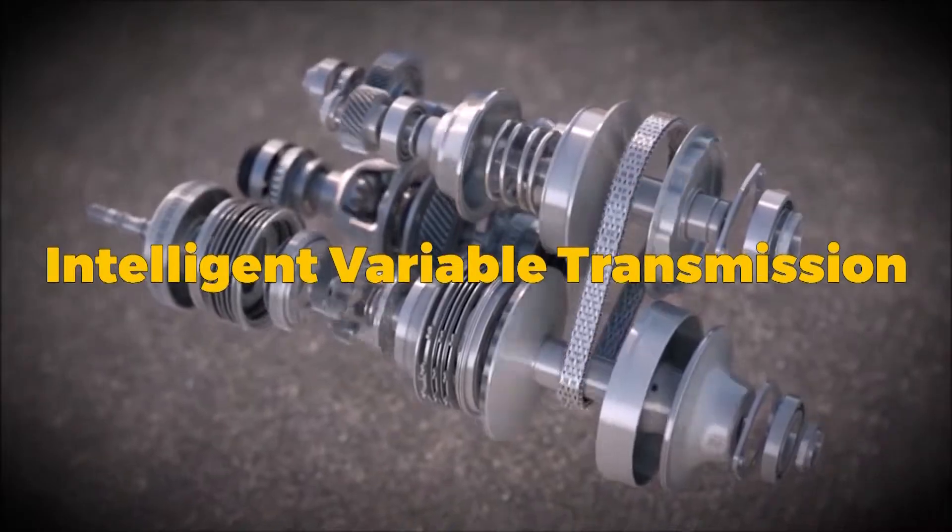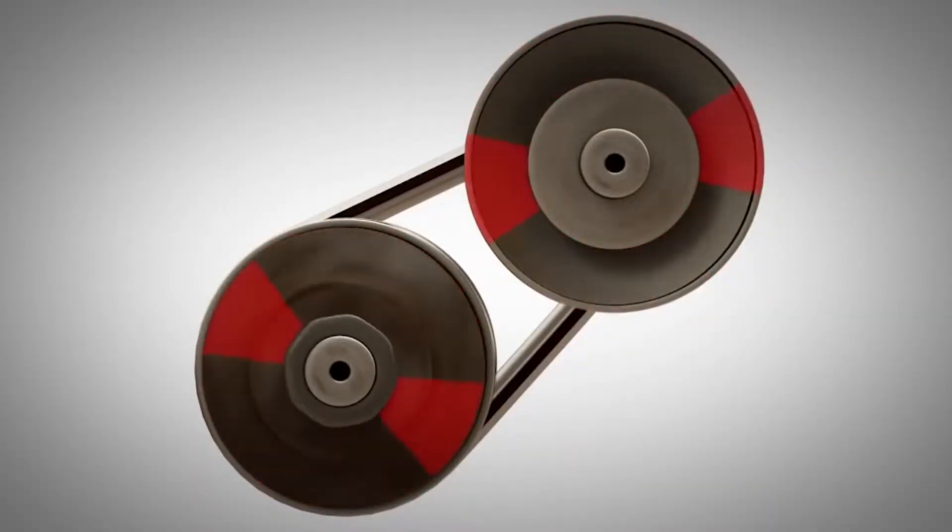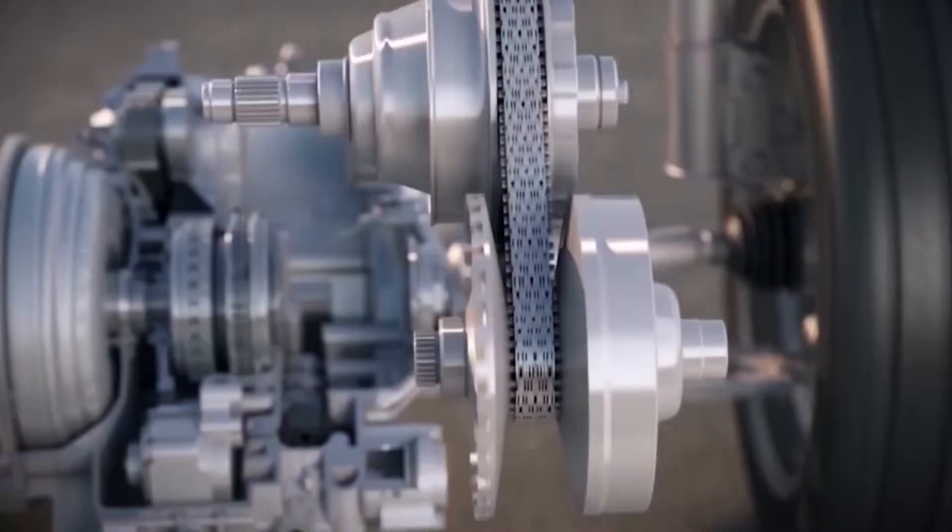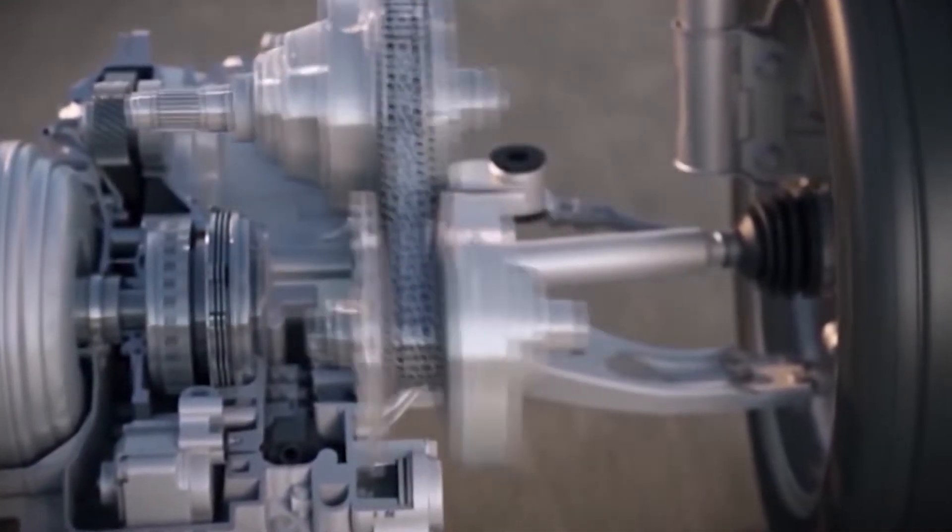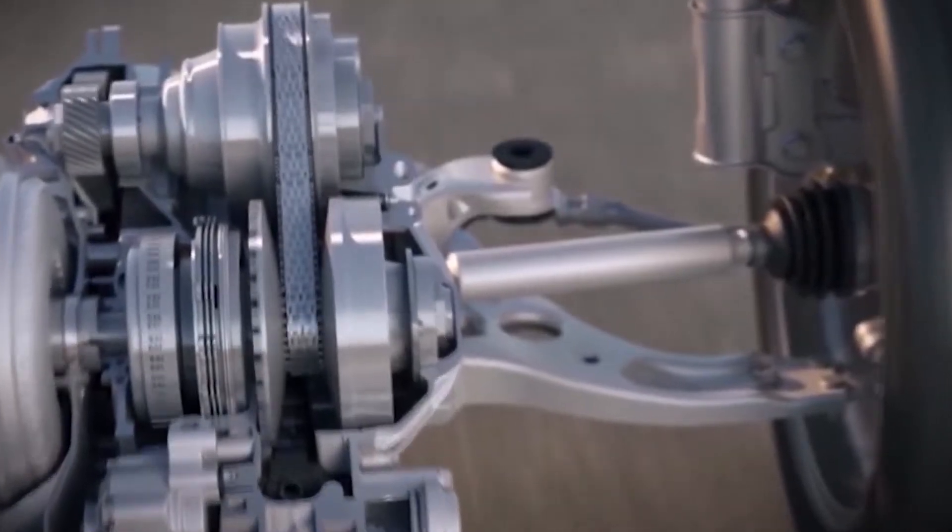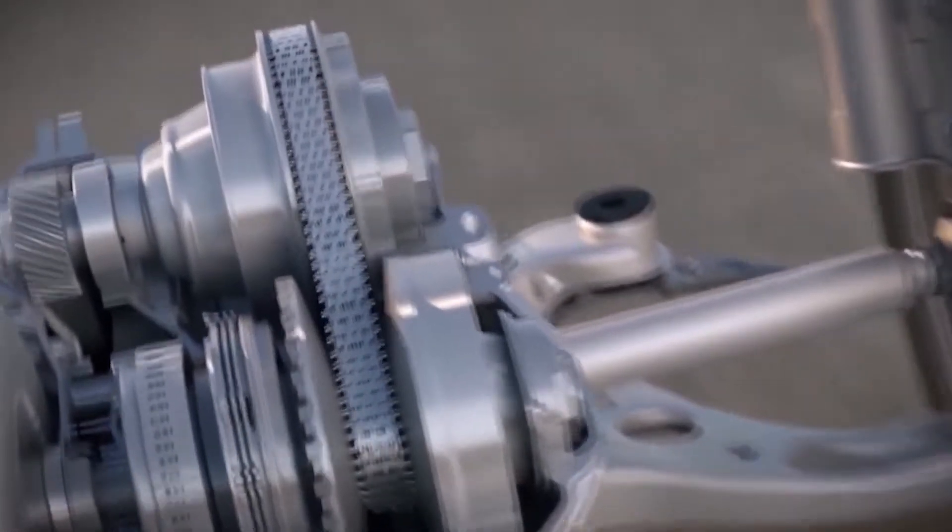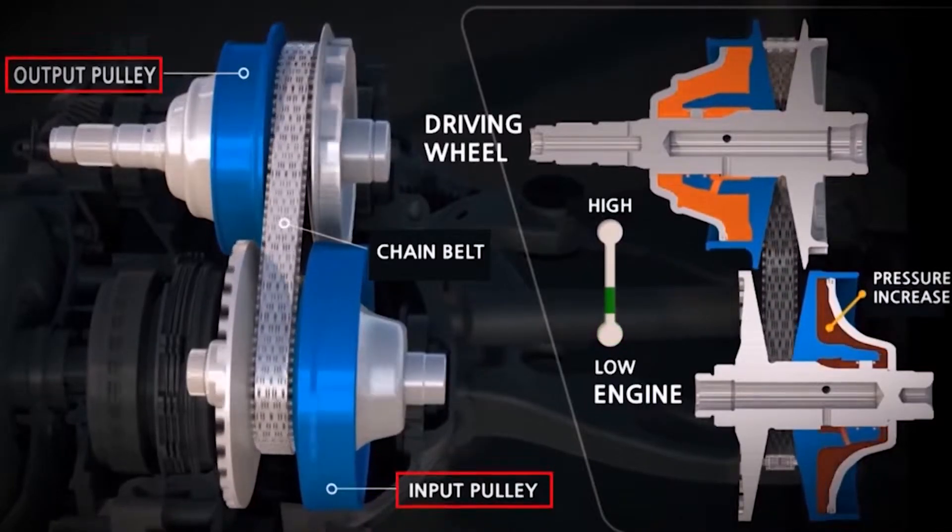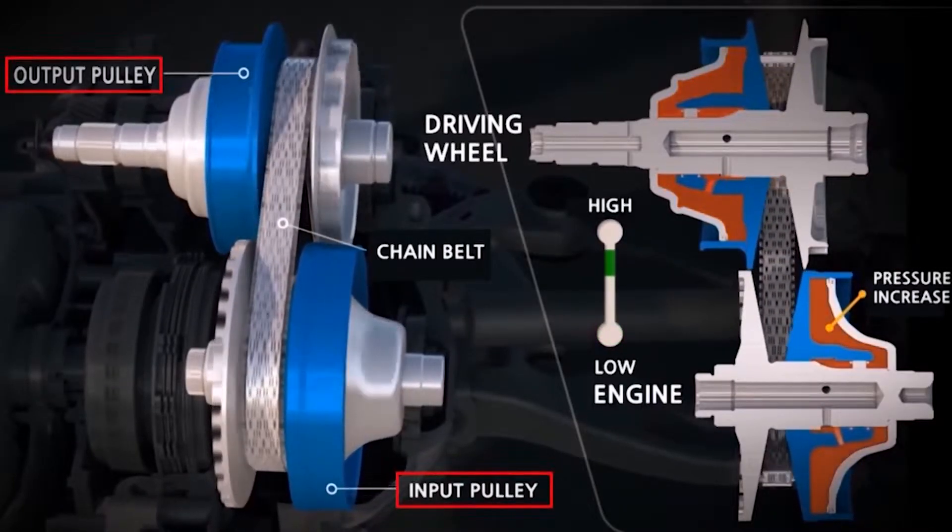Intelligent Variable Transmission, or IVT, works in the same way as a continuous variable transmission, but instead of fixed gear shifts, the IVT picks up virtual gear shifts based on the driver's input and driving conditions. In comparison to other automatic transmissions, the IVT transmission has continuous shifts that help provide better fuel efficiency.